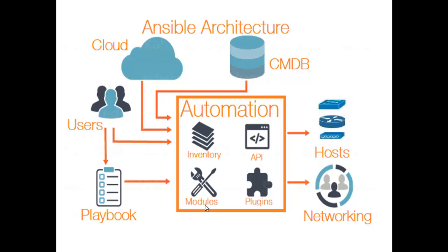Ansible takes action via transport: SSH for Unix, Linux, or networking devices, and WinRM for Windows systems. APIs in Ansible are used as transport for cloud services, both public and private.